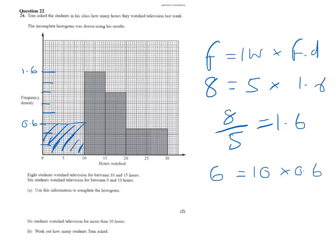Now we're told that no student watched television for more than 30 hours. Work out how many students Tom asked. So we can put in the information that we already know. We've got six for the first bar, 10 for the second. And for the third bar, 1.6, 1.4, 1.2. The third bar is 1.2 high and it's five wide. So 1.2 times 5, 0.2 times 5 is 6. So that will be 6 here.